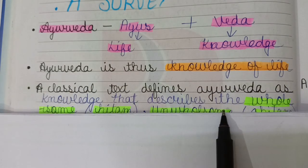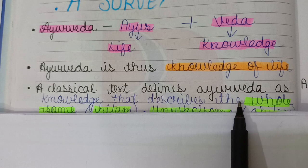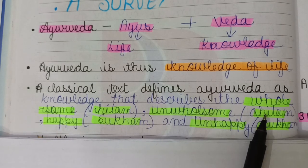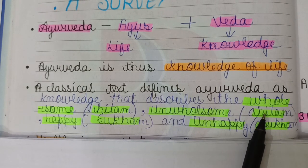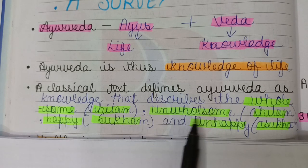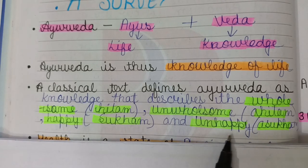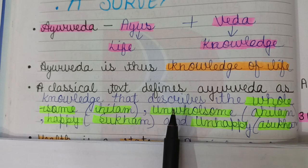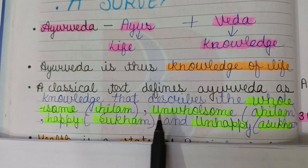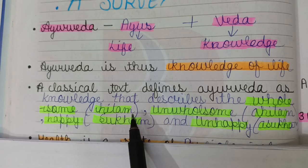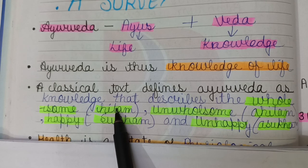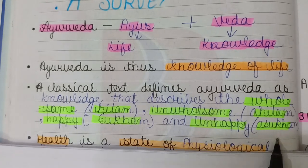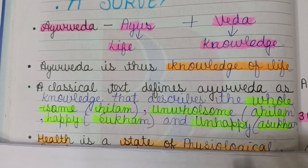A classical text defines Ayurveda as knowledge that describes the wholesome, unwholesome, happy, and unhappy. Four terms are used for Ayurveda: Hitam, Ahitam, Sukham, and Asukham. These are the four stages.